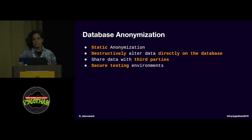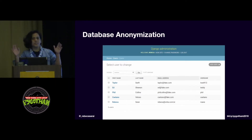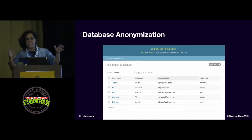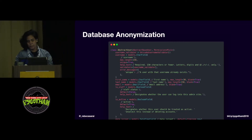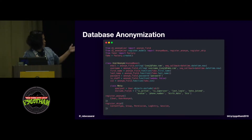We wanted local and staging environments that had the same type of data as production. Assume that I have customers in the Django admin — Taylor Swift, Phil Collins, and Caetano Veloso, a Brazilian singer. I want to share this data with someone without revealing my customers' privacy. So we have a user model on the project and built an anonymizer class that deals with all the anonymization of the user model. We're using a library to make things easy, and we define a class called UserAnonymizer.